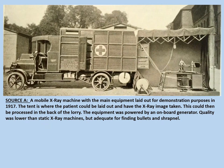The source shows a mobile x-ray machine with the main equipment laid out for demonstration purposes in 1917. The tent is where the patient could be laid out and have the x-ray image taken, which could then be processed in the back of the lorry in a photographic darkroom. The equipment was powered by an onboard generator — usually just the truck's engine. Quality was lower than with static x-ray machines in hospitals, but adequate for finding things like bullets and shrapnel.